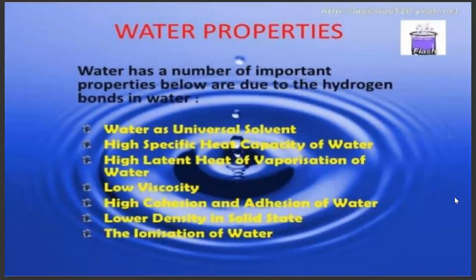These are the different properties of water which make it very ideal for consumption by humans and other organisms. Water is a universal solvent. It has high specific heat capacity, high latent heat of vaporization, and low viscosity — therefore it can easily flow and move from one location to another. It has high cohesion and adhesion, giving rise to surface tension. It has lower density in solid state, which is why a lake will not be frozen entirely — only at the surface. It also has ionization of water.